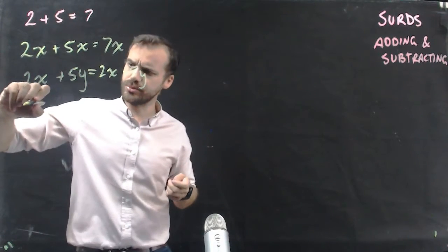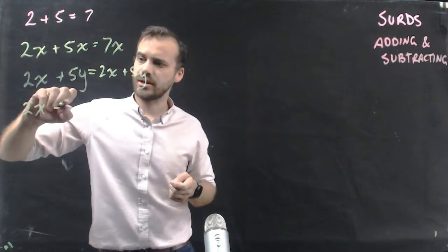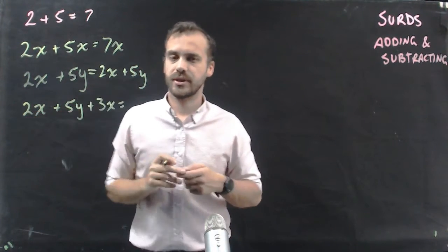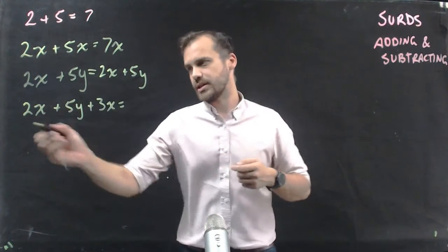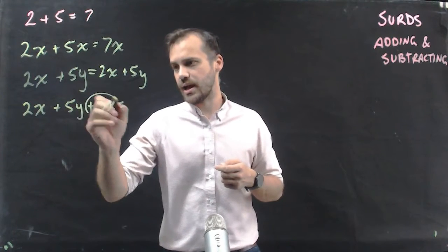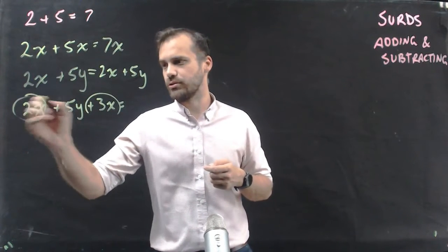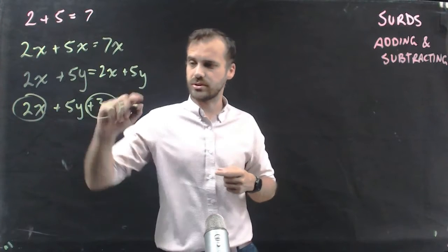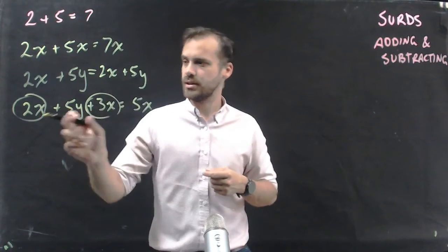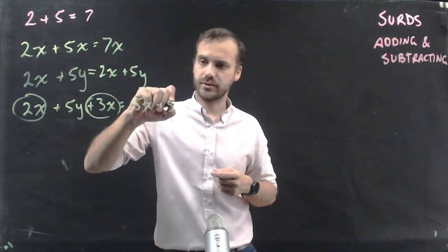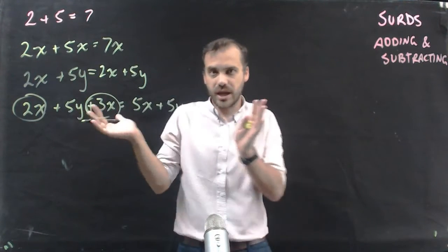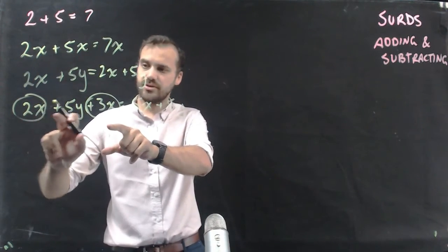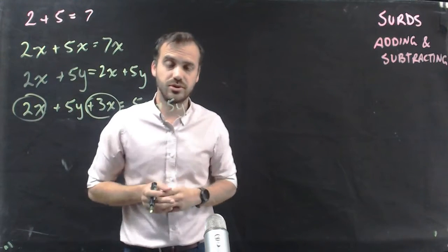I can group terms though. So if I see 2x plus 5y plus 3x, I can take 2x and add 3x to it — I can group these like terms. 2x plus 3x is 5x, plus 5y. So even if I can't put everything into a single term, I can simplify it — take 3 terms and turn it into 2 terms.